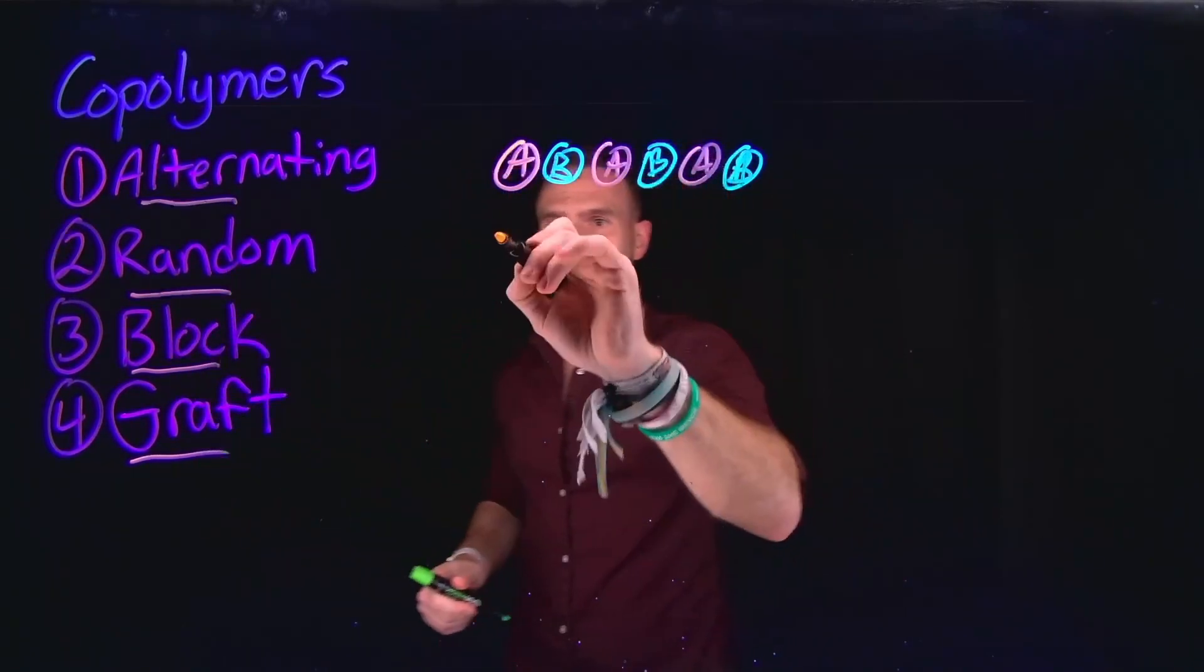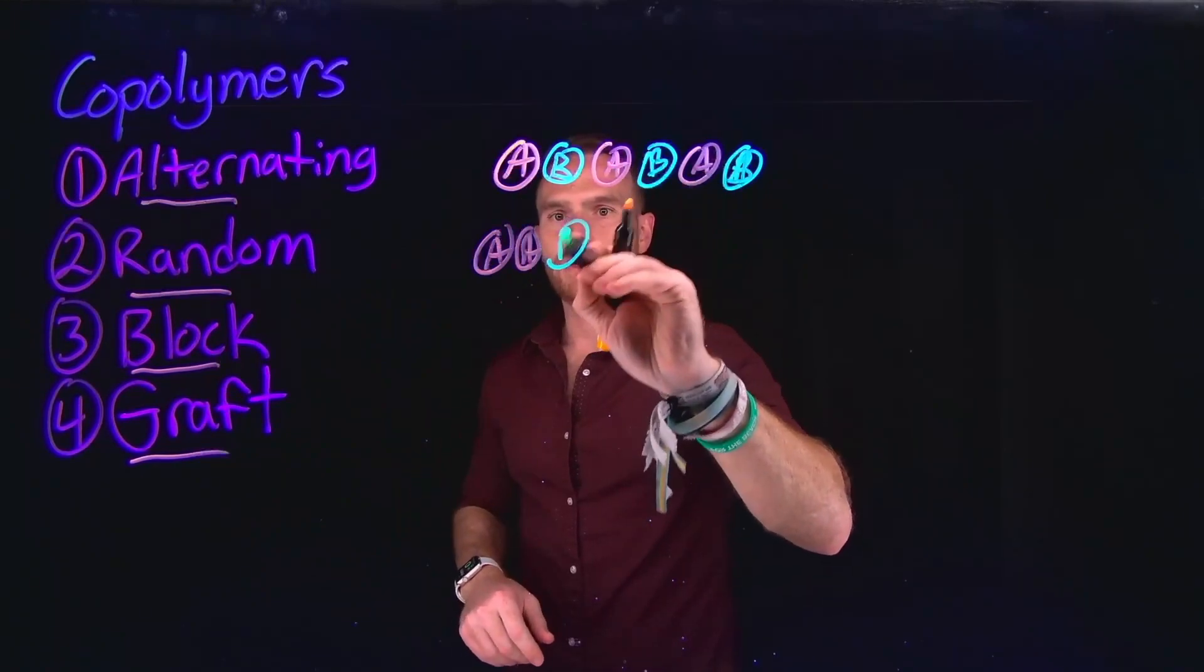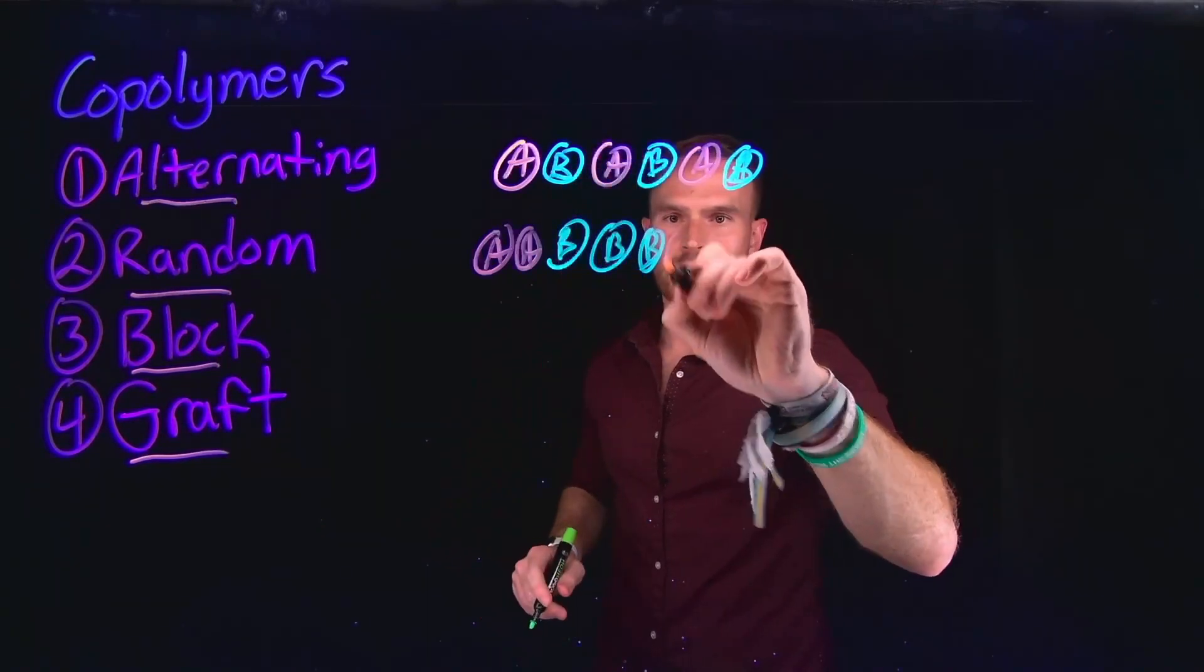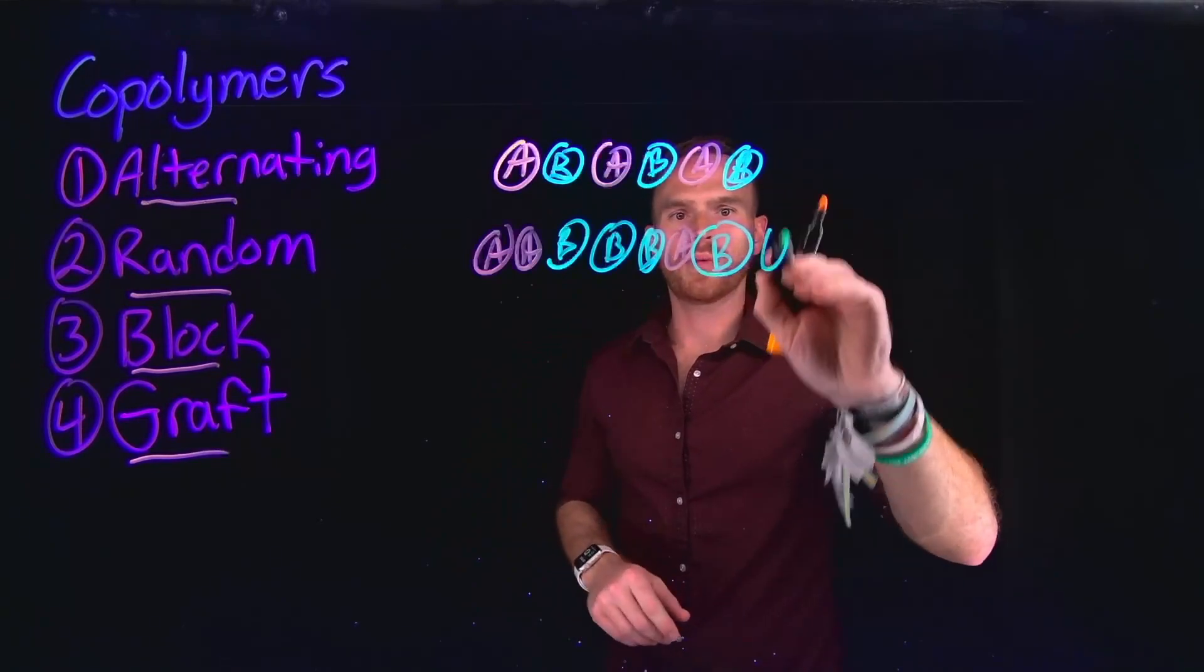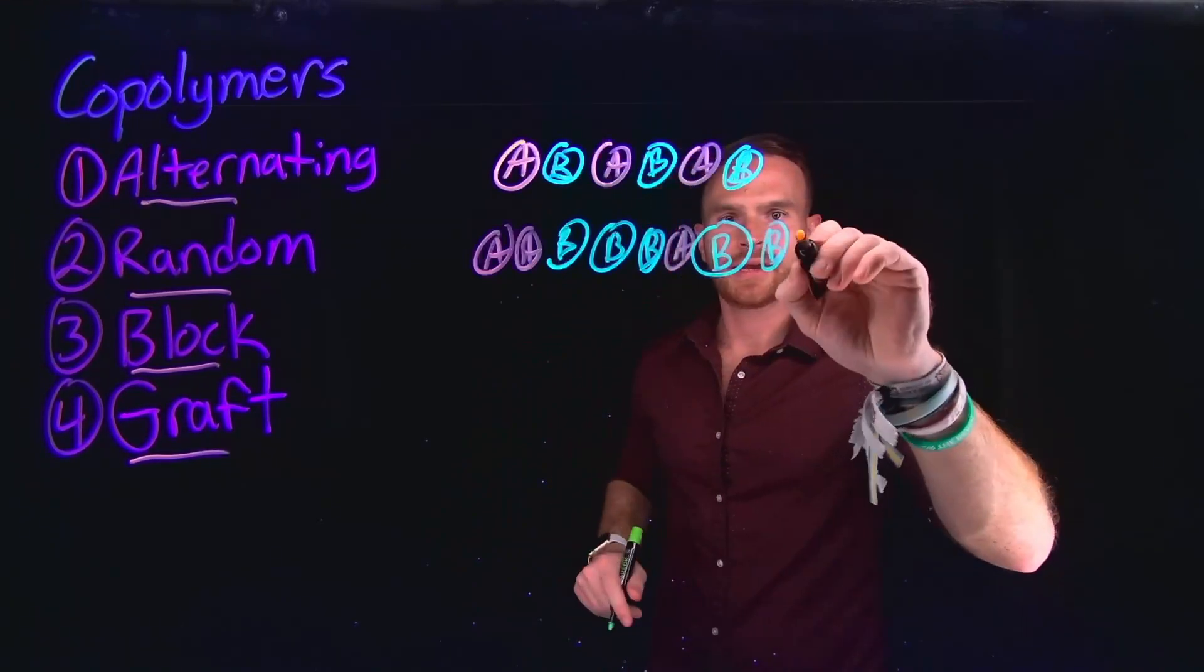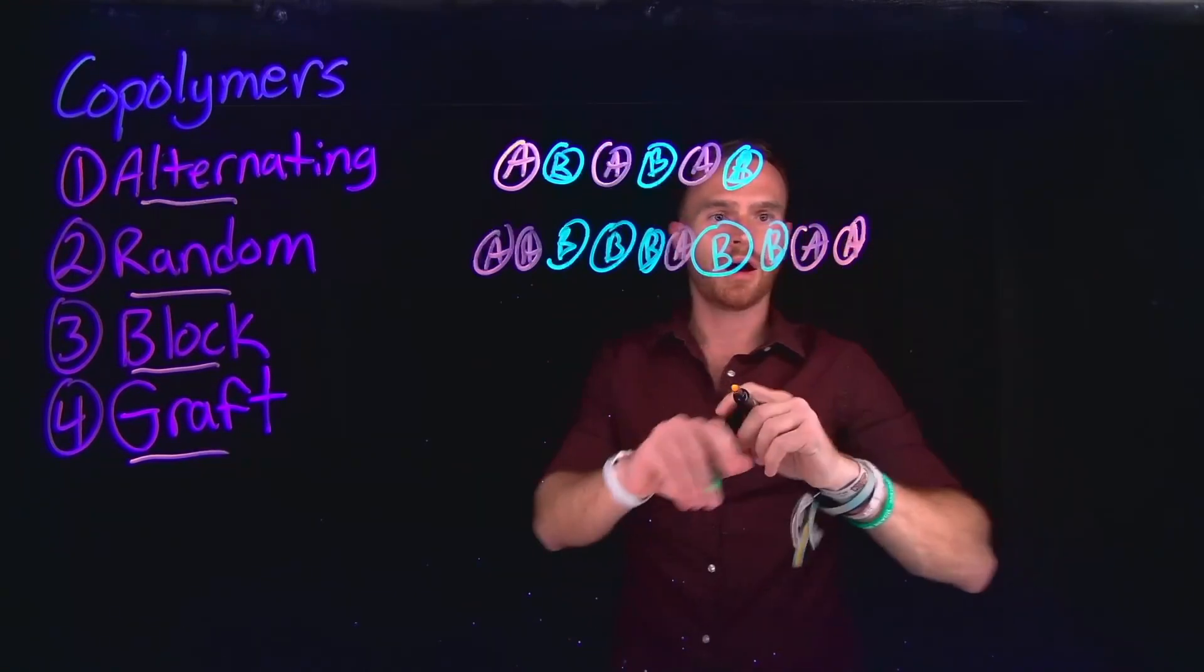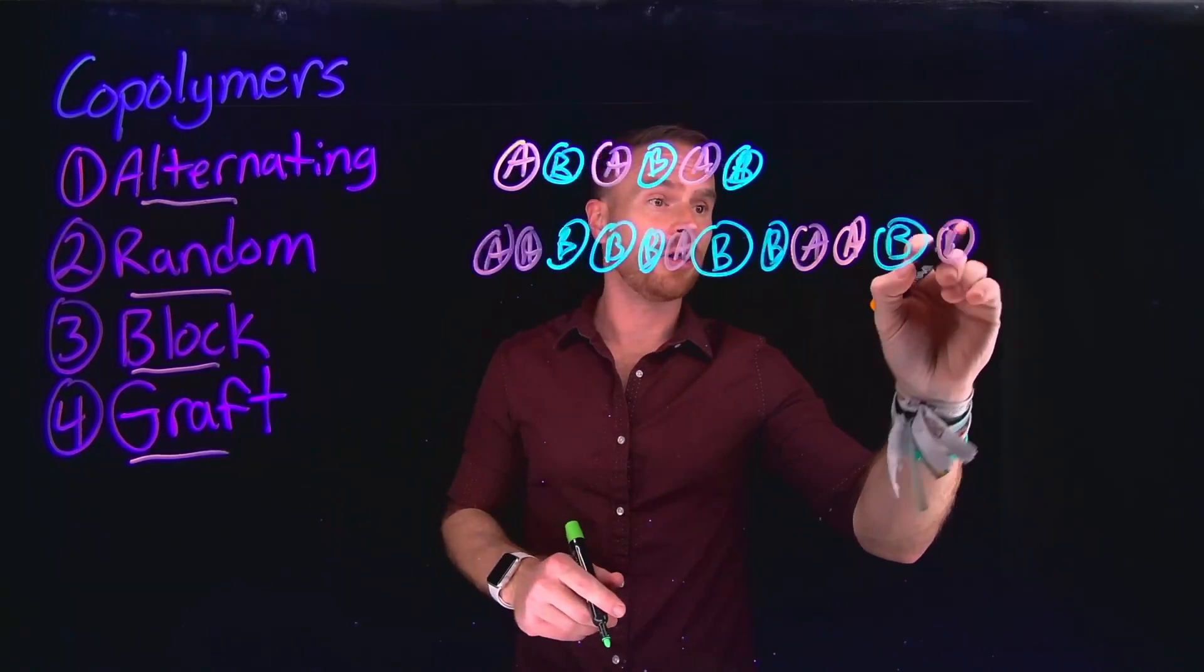Random, as the name suggests, would just be some sort of random assortment of any one of those monomers. So it could be that it appears that in certain locations there may be some sort of pattern. However, what we often find is that given enough time, you'll notice that it is a relatively random assortment of different monomers that make up these random polymers.